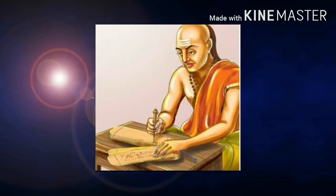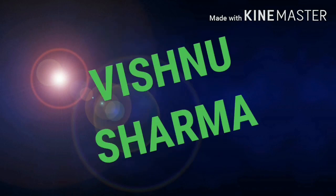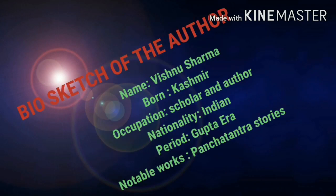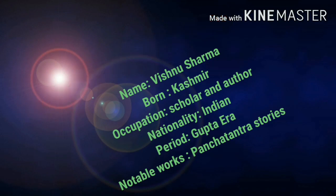The author of the Panchatantra stories was Vishnu Sharma. Vishnu Sharma was born in Kashmir. He is said to be an Indian scholar and author who is believed to have written the Panchatantra collection of fables. The exact period of the composition of the Panchatantra is uncertain, and estimates vary from 1200 BCE to 300 CE. He wrote Panchatantra stories to teach political science to his royal disciples. Name: Vishnu Sharma. Born in Kashmir. Occupation: scholar and author. Nationality: Indian. Period: Gupta era. Notable work: Panchatantra.